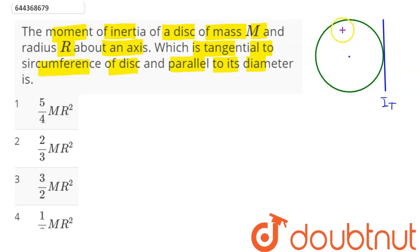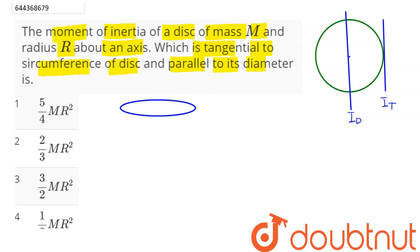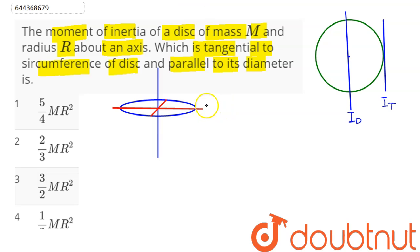We first find the moment of inertia about the diameter passing through the center of mass, then apply the parallel axis theorem. We know the moment of inertia of a disc about an axis through the center of mass and perpendicular to its plane is MR²/2. Considering the x and y axes lying in the plane of the disc, by symmetry the moment of inertia about the x-axis equals the moment of inertia about the y-axis, since both are diameters and the mass distribution is the same about both axes.